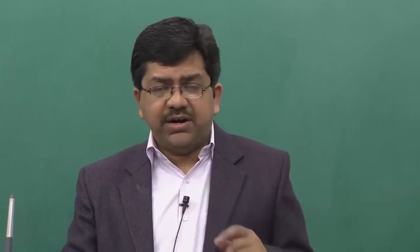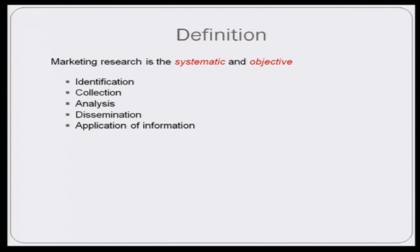The first thing I will do is give you the definition of this marketing research process. Marketing research is the systematic and objective process wherein we identify — the process involves identification, collection, analysis, dissemination, and application of information. Two things are extremely important: it is a systematic process with certain sequential phases, moving from identification of information need, to collecting that information, then analyzing it, then disseminating that analysis to decision makers, and then the application of that information.